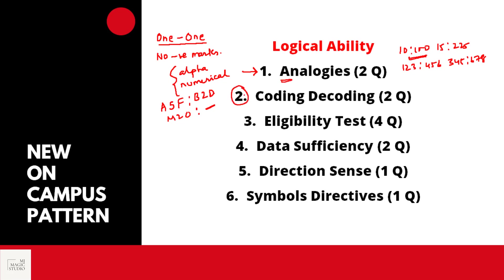Next topic is coding decoding — again, two questions would be asked. Maximum chances are that there would be addition or subtraction type coding decoding, like where A is coded as Z then B is coded as Y, or A is coded as E then B is coded as F. Then if 'train' is coded as something, find the code for 'rain' or 'sand'.